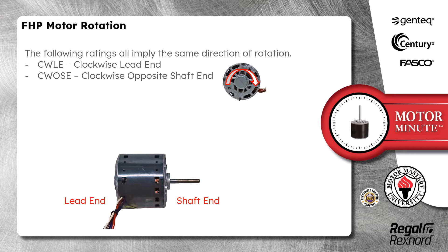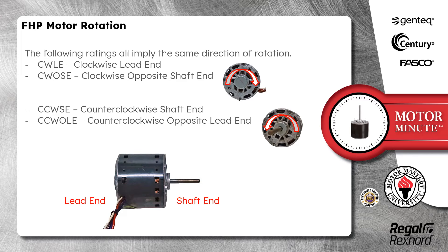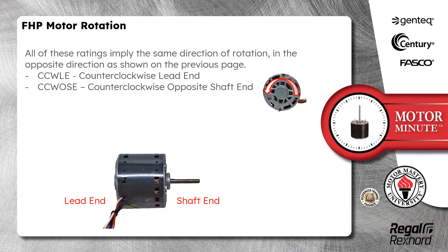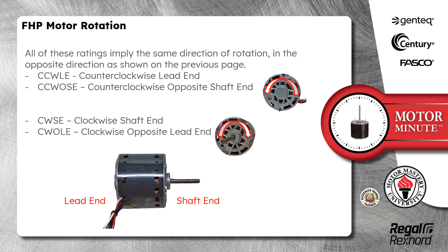The following ratings all imply the same direction of rotation. Clockwise lead end is the same as clockwise opposite shaft end, which is also the same as counterclockwise shaft end and counterclockwise opposite lead end. All of these ratings also imply the same direction of rotation in the opposite direction. Counterclockwise lead end is the same as counterclockwise opposite shaft end, which is also the same as clockwise shaft end and clockwise opposite lead end.